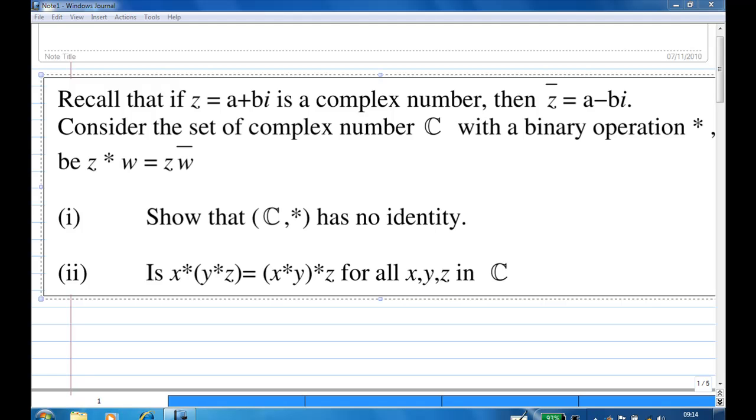In this case, if z equal to a plus bi, then the conjugate of z is a minus bi. First part, we're going to show that the set of complex number under this binary operation star has no identity. Then we're going to check whether binary operation star is associative or not.